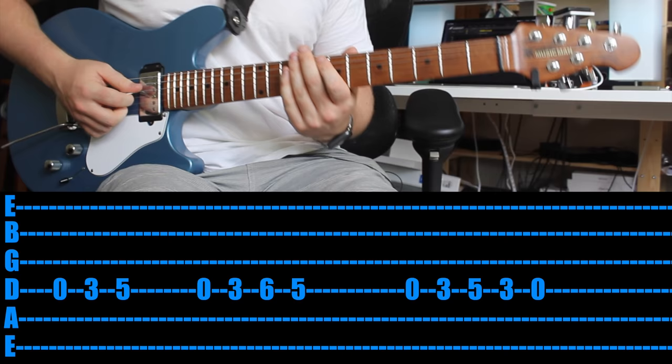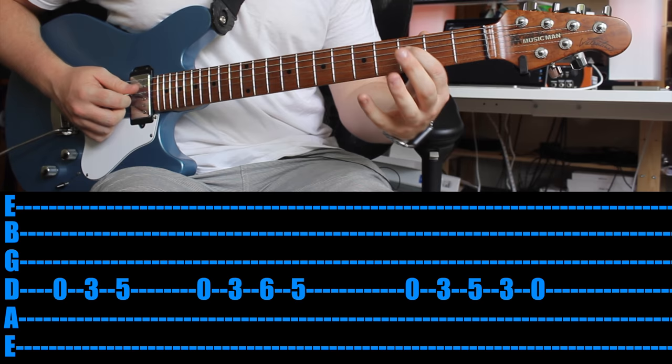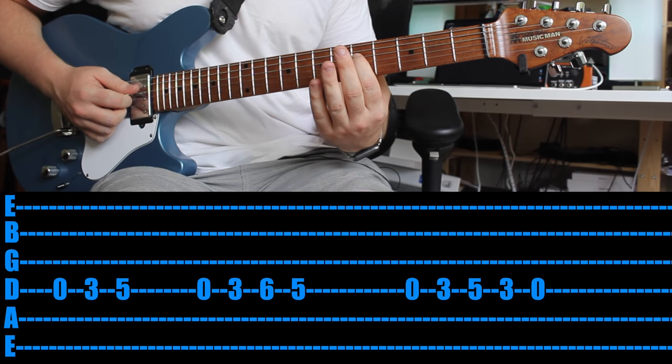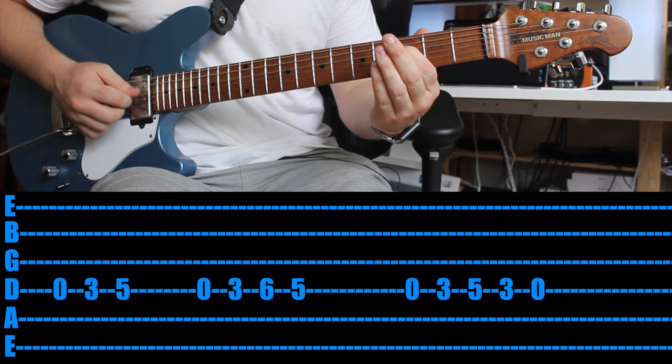So you're going to start off by just picking the open fourth string or that D string. Once you've done that, use your first finger on the third fret of the same string. Then move it up two frets to the fifth fret. So what we've got so far. Very good. Then you start off again with an open string. Then third fret again. Then same string go all the way up to the sixth fret and then the fifth fret behind it.